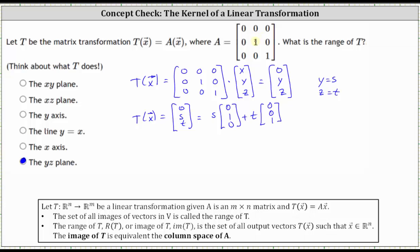Notice we have pivots in column two and column three, which means the vectors (0, 1, 0) and (0, 0, 1) form a basis for the column space, and also a basis for the range of T.